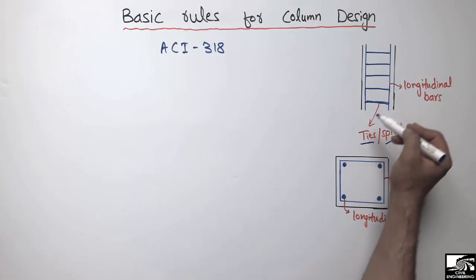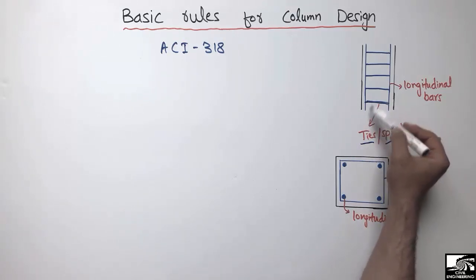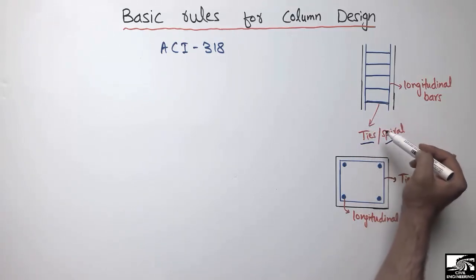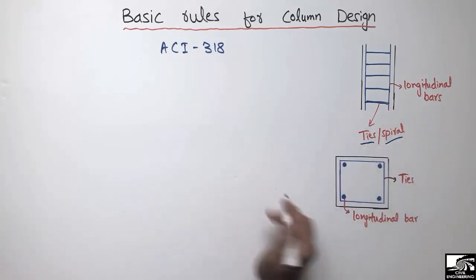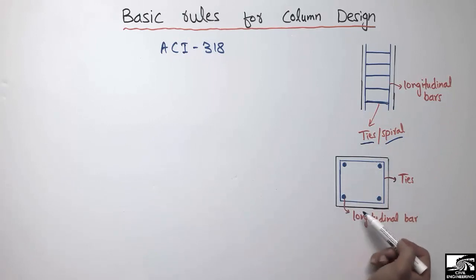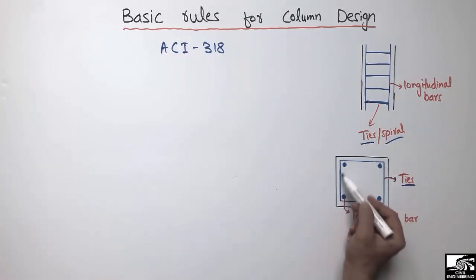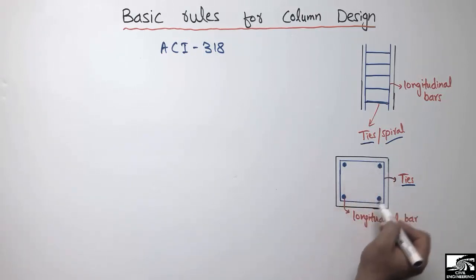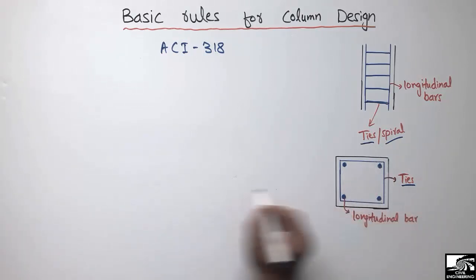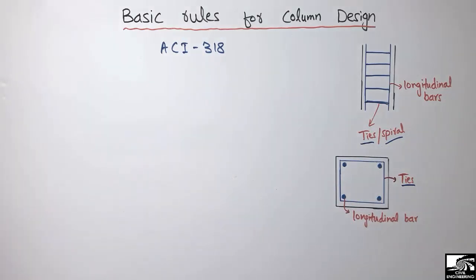Shear reinforcement is used to increase the shear capacity of the concrete column. It is also used to provide confinement of the reinforced concrete column. As we can see in the cross section, the ties are provided along the corners of the column, and there are four longitudinal bars — one on each corner. Now let's discuss the basic rules for the design of column.